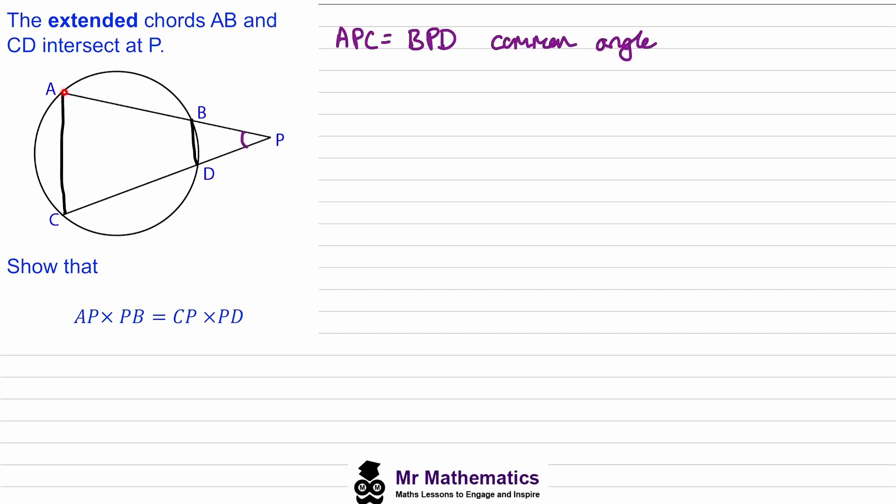And we can also see that this quadrilateral ABDC is a cyclic quadrilateral, and this means that the opposite angles add up to 180 degrees.